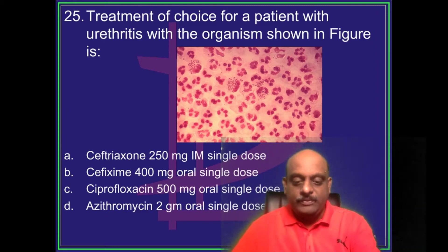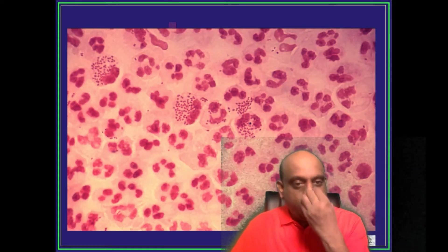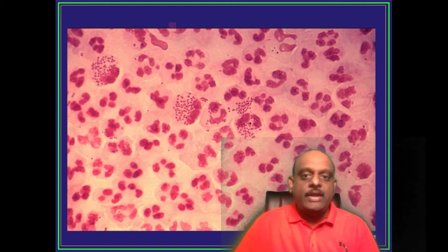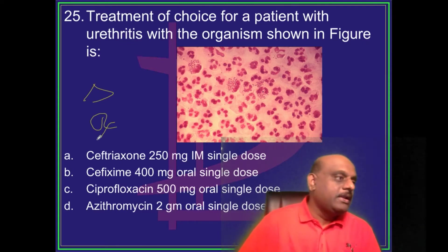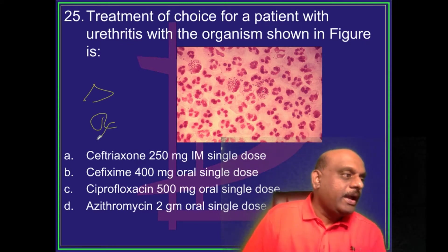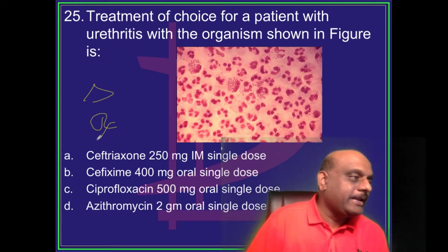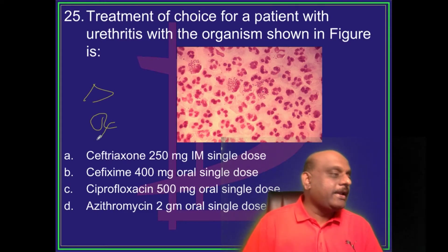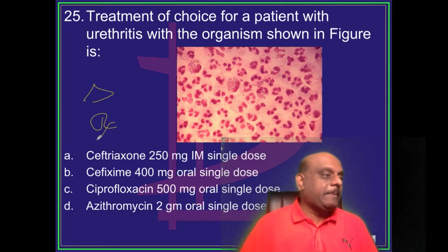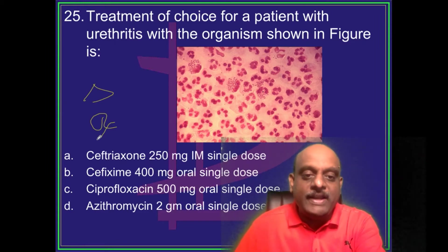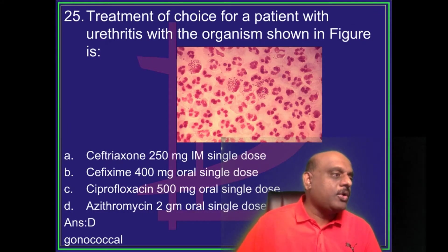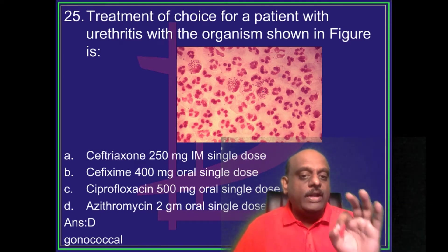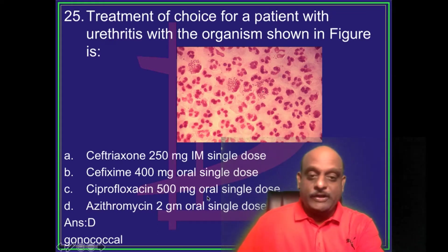A patient had urethritis and an organism was found on microscopy. The diagnosis is gonorrhea. Whether gonococcal or non-gonococcal, the protocol for urethritis is azithromycin 2 grams oral single dose. Ceftriaxone 250 mg alone is not sufficient as the complete answer here.